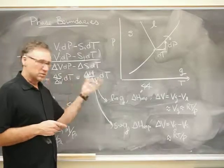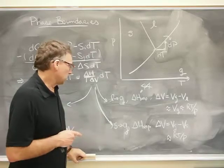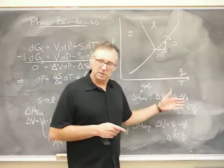And we can integrate both sides separately. If you do that, the result is called the Clausius-Clapeyron equation.